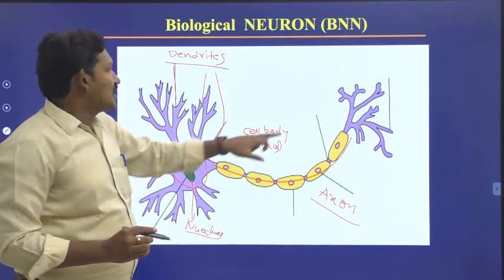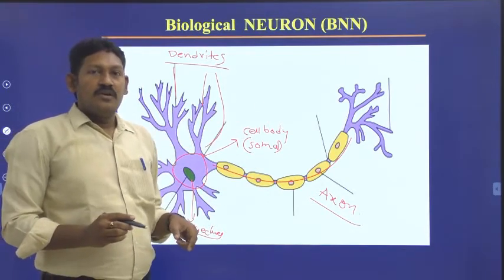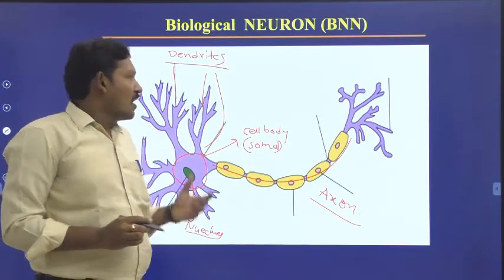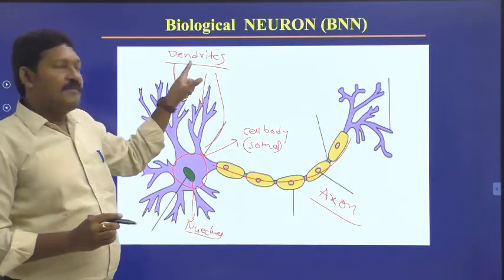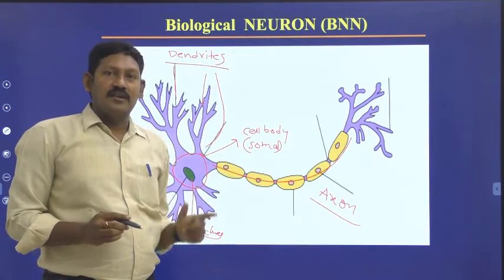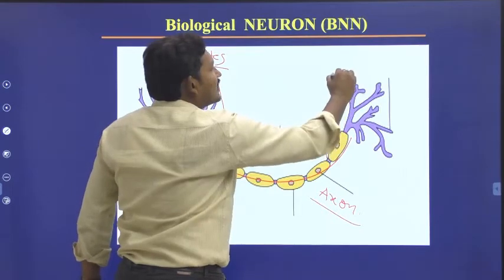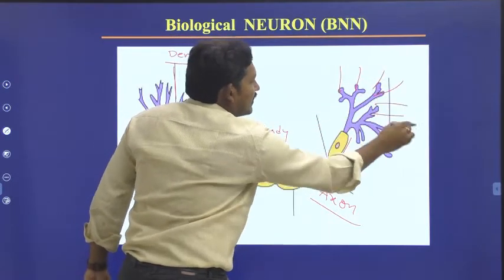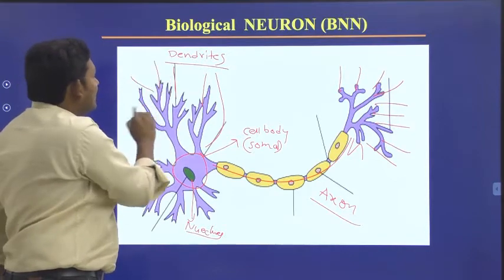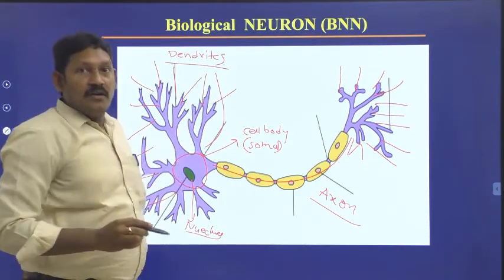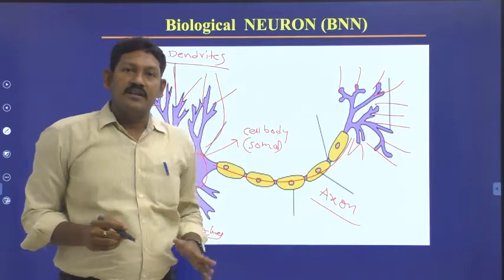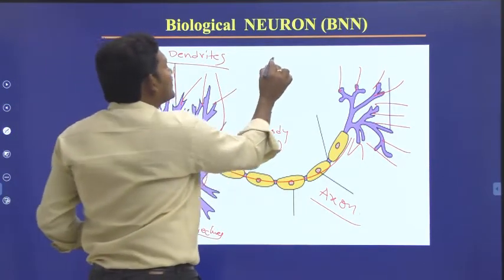This is the structure of a single neuron. We have billions of such neurons in our human brain, all interconnected with one another. The dendrite of one neuron is connected with the axon of another neuron, and the axon of one neuron is connected with the dendrite of another neuron. The place where two neurons are connected, we call it a synapse.